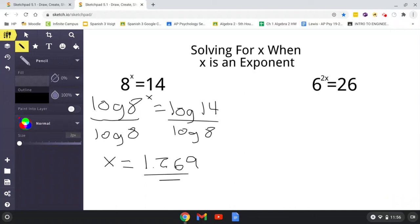And now, in this equation on the right, it's essentially the same exact thing. I'll just show you the one little difference. So you set it up as log of 6 to the 2x equals log of 26.